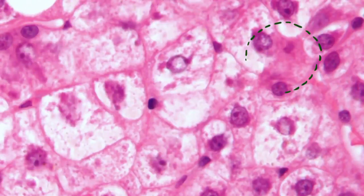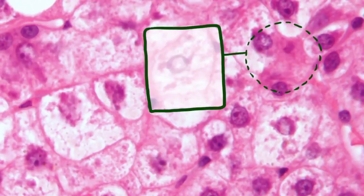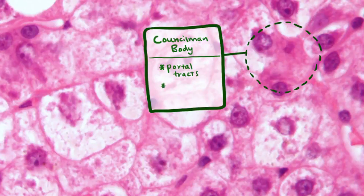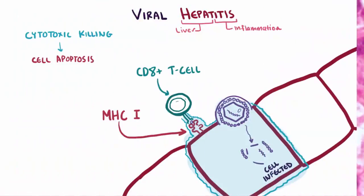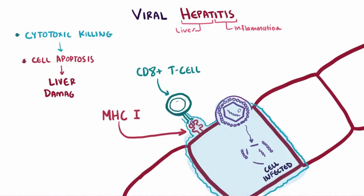Hepatocytes undergoing apoptosis are sometimes referred to as Councilman bodies, shown on histology here. This typically takes place in the portal tracts and the lobules of the liver. This cytotoxic killing of the hepatocytes is the main mechanism behind inflammation of the liver and eventually liver damage in viral hepatitis.